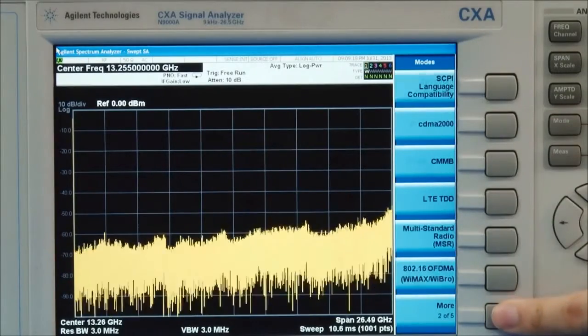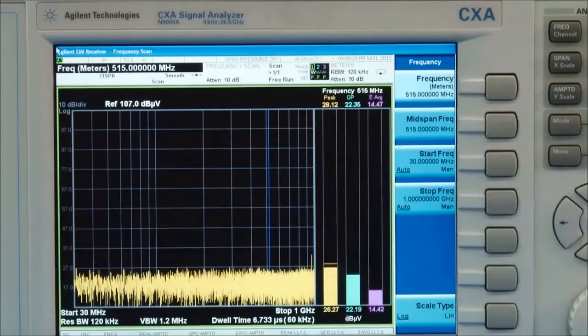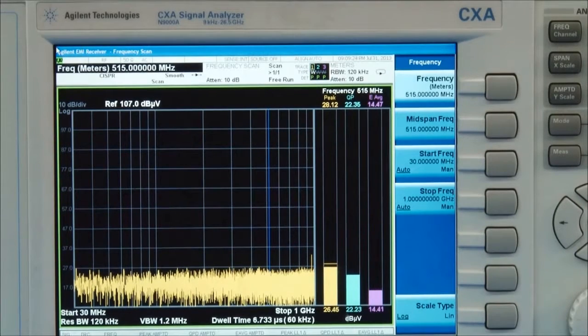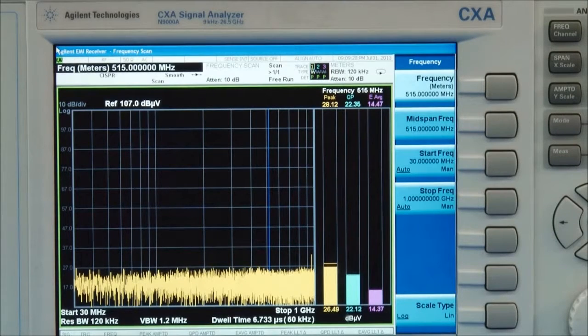When we access the EMI receiver mode, we'll see the display looks different than when the CXA is in normal spectrum analysis mode. In EMI receiver mode, the analyzer is able to make CISPR pre-compliant measurements, which has 6 dB bandwidth filters and selectable EMI detectors, including EMI average, quasi-peak, and peak detectors.